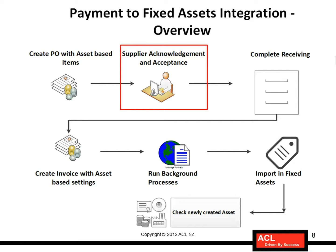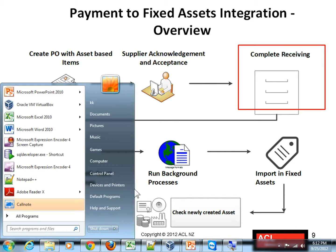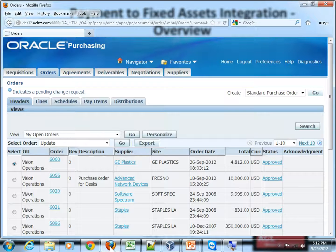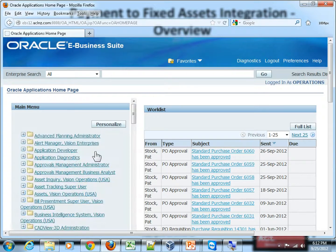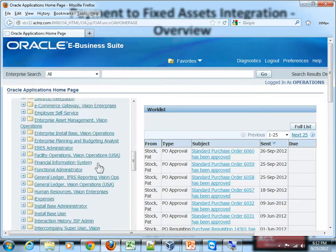The supplier has already sent you an intimation for the receiving, and all you have to do is prepare your warehouse and receive the shipment sent by the supplier. Let's go ahead and complete the receiving for the purchase order. Go back to Oracle Applications and then go to home. It's the same super user, but in real life you will have a separate user for the warehousing clerk or receiving folks.